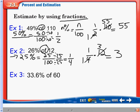Our last example using fractions is 33.6% of 60. 33.6% is close to 33.3%. So we round to 33.3%, which is 33.3 over 100. 33.3 is about 1 third. Typically for 1 third we would have to have a repeating 3.